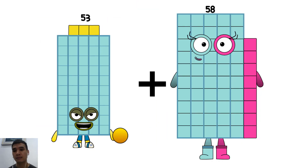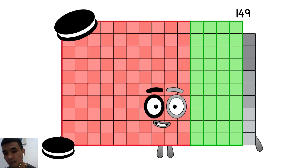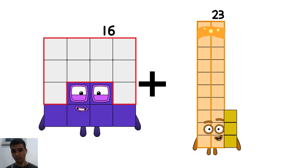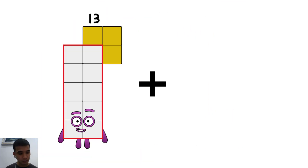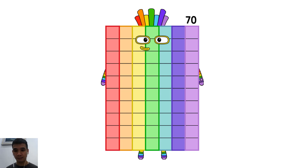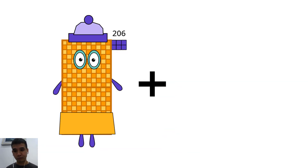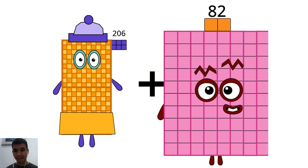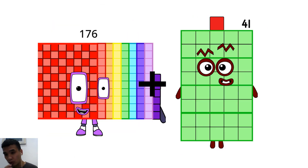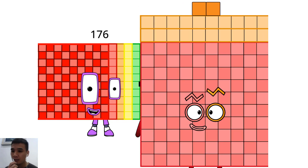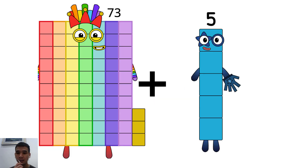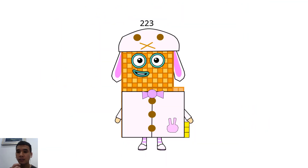53 plus 96 equals 149. 16 plus 23 equals 39. 21 plus 49 equals 70. 206 plus 82 equals 288. 176 plus 122 equals 298. 73 plus 150 equals 223.